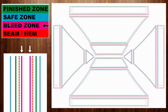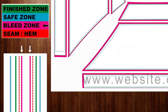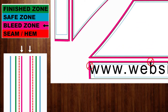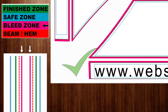The magenta line indicates the bleed zone. This area of the fabric is where the tent is sealed to the other pieces or is otherwise used in the build process. Anything in the bleed zone will not be visible once the tent is finished. Make sure that no part of any text or images falls into this area.